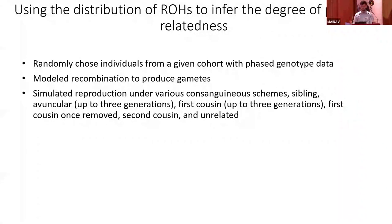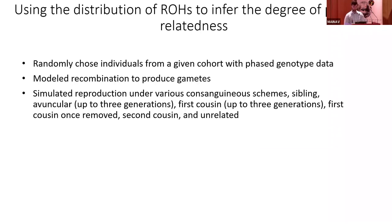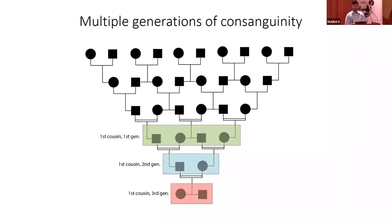From the cohort, we randomly chose individuals with phased genotype data and modeled recombination to produce gametes. We simulated reproduction under various consanguineous schemes: individuals with parents that are siblings, avuncular (such as uncle-niece unions), first cousins, first cousins once removed, second cousins, or unrelated. We also modeled consanguinity for first cousins with multiple generations of consanguinity.